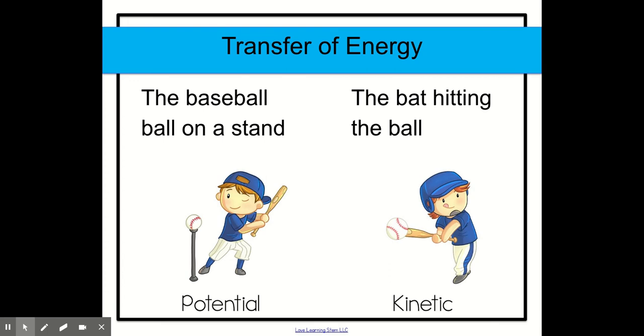Here's another example. The baseball is on the stand. It has potential energy and it's not moving but then the bat hits the ball and the ball moves forward. That's when it has kinetic energy. So it had potential energy but then the ball got hit and is now in motion. So it has kinetic energy.